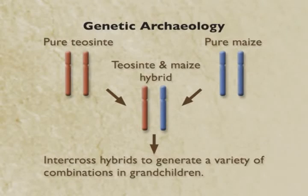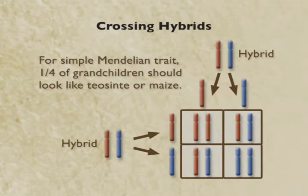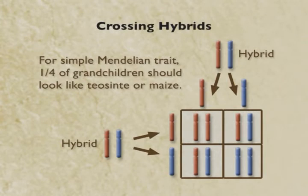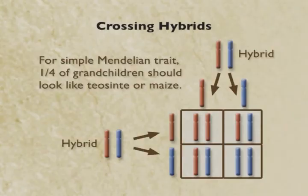If you intercross those F1 hybrids to generate a grandchild or second generation — an F2 generation — you'll start to put together different chromosome combinations based on Mendel's laws. For a simple Mendelian trait, you typically will take from the hybrids, randomly, either the teosinte or the maize chromosome — a red type or a blue type — in the seeds and pollen of each hybrid, and put them back together during fertilization to generate the F2 grandchildren shown in the squares.